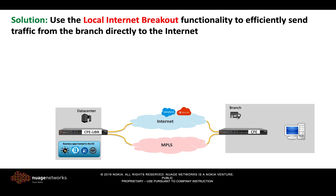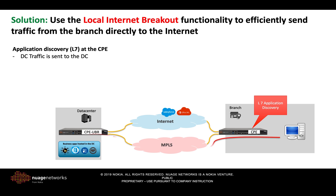The solution is to use the local internet breakout functionality and send the traffic efficiently. For example, we could use the internal MPLS link to send traffic destined to data center applications, and the internet link to send traffic directly to the internet. The decision of which traffic goes where will be made at the CPE, which will dispatch the traffic based on the L7 signature.